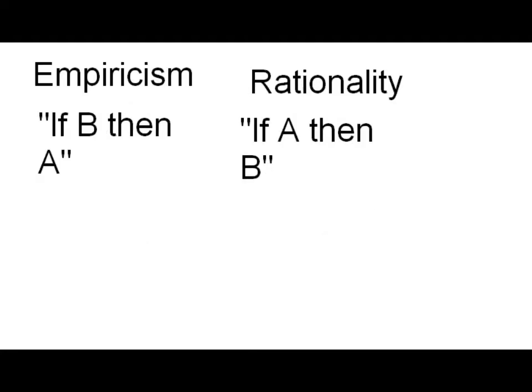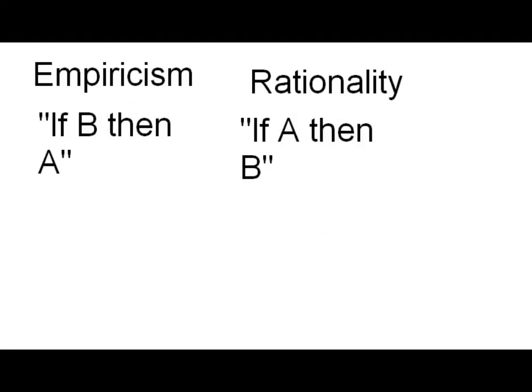For example, empiricism uses 'if B, then A' — it studies the effect and looks for the cause. Rationality uses 'if A, then B' — it looks at the cause and figures out, or rather hypothesizes, the effect. That's more accurate.